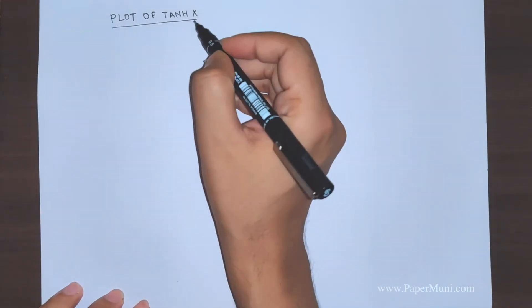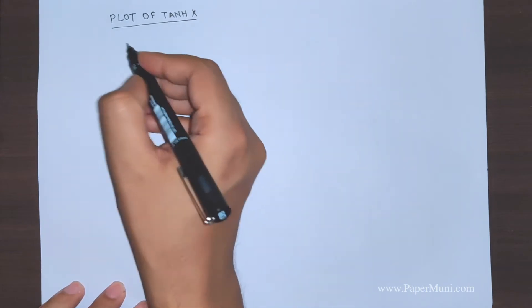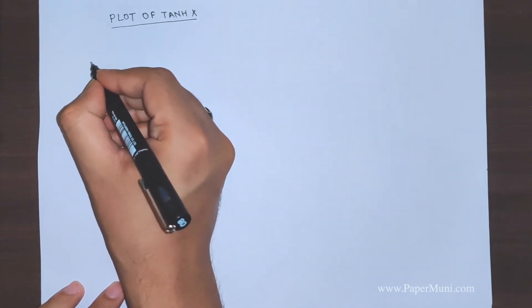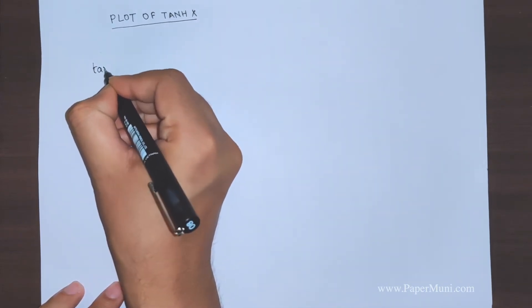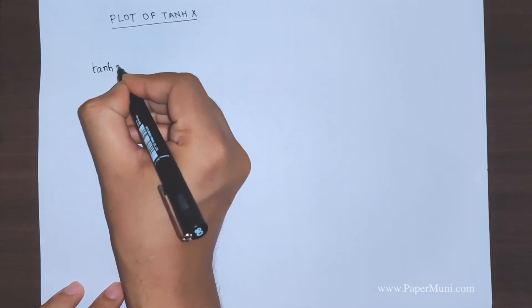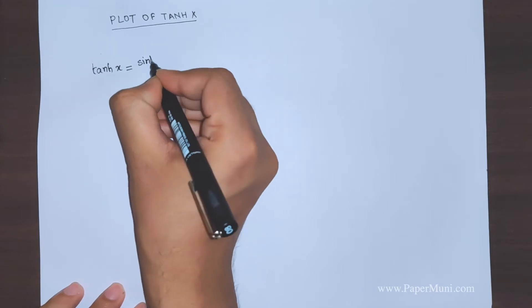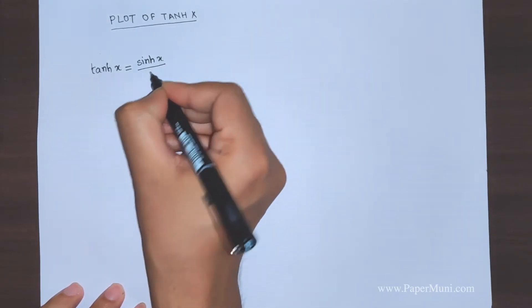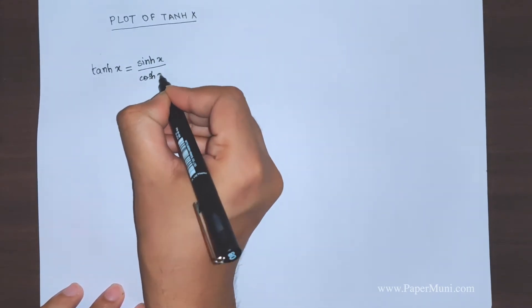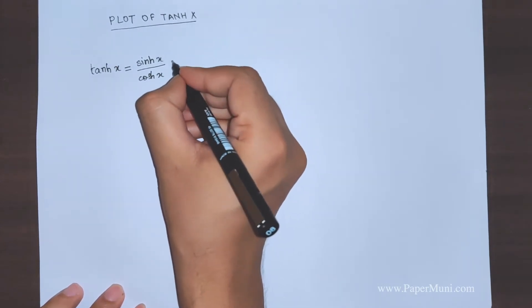The plot of tan hyperbolic x. Let's see how it's defined. Tan hyperbolic x can be written as sinh x divided by cosh x.